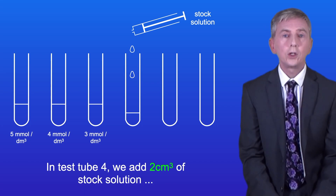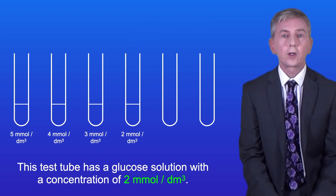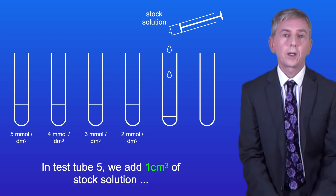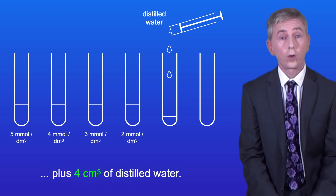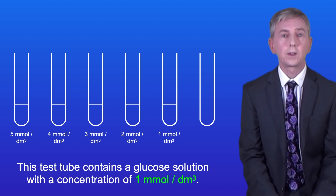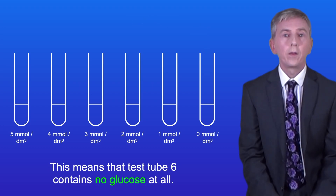In test tube 4 we add 2 centimeters cubed of stock solution plus 3 centimeters cubed of distilled water, giving a concentration of 2 millimoles per decimeter cubed. In test tube 5 we add 1 centimeter cubed of stock solution plus 4 centimeters cubed of distilled water, giving a concentration of 1 millimole per decimeter cubed. Finally, to test tube 6 we add 5 centimeters cubed of distilled water, meaning test tube 6 contains no glucose at all.